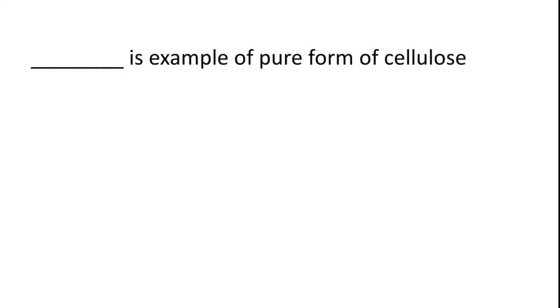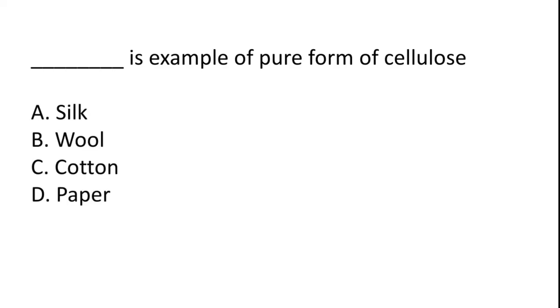Which is an example of a pure form of cellulose? Silk, wool, cotton, paper. So the correct answer is option C, cotton.